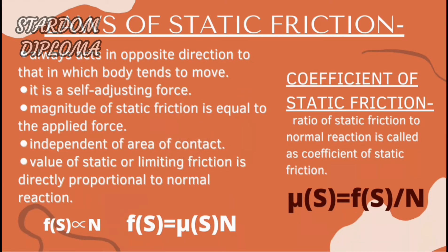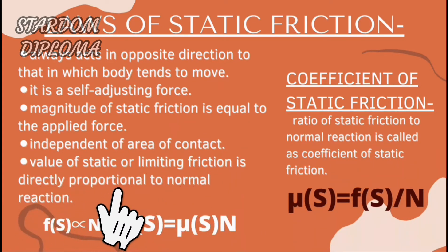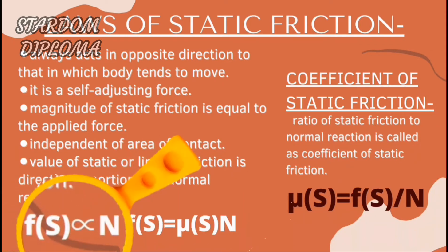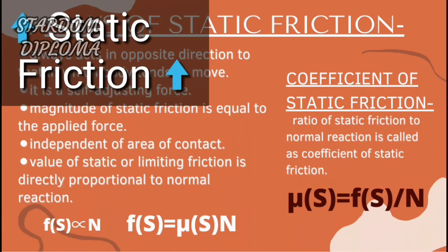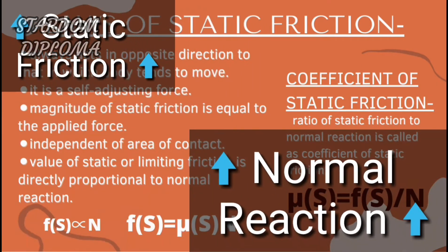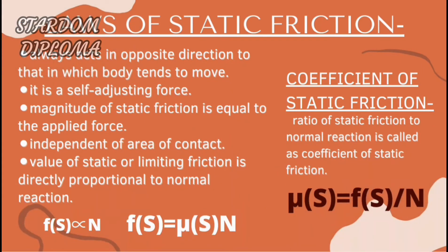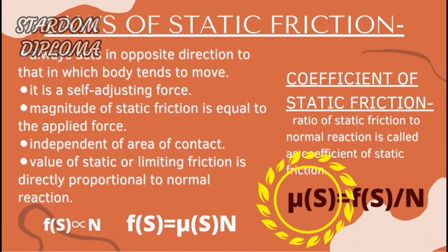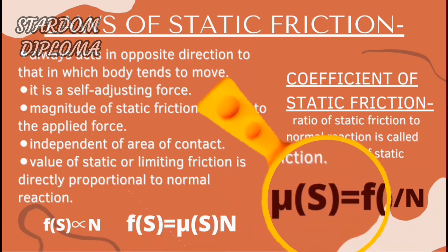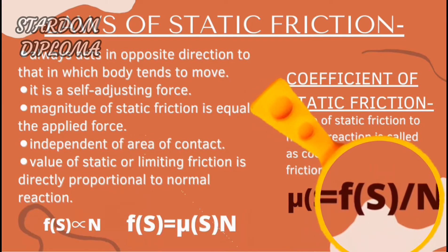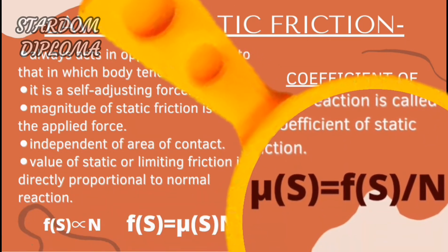The last law is that the value of static friction, or limiting friction, is directly proportional to the normal reaction: Fs ∝ N. If the static friction increases, the normal reaction will also increase, and if it decreases, the normal reaction will also decrease. Removing the proportionality symbol, we get the constant μs, where μs is the coefficient of static friction. It is defined as the ratio of static friction to normal reaction: μs = Fs / N.